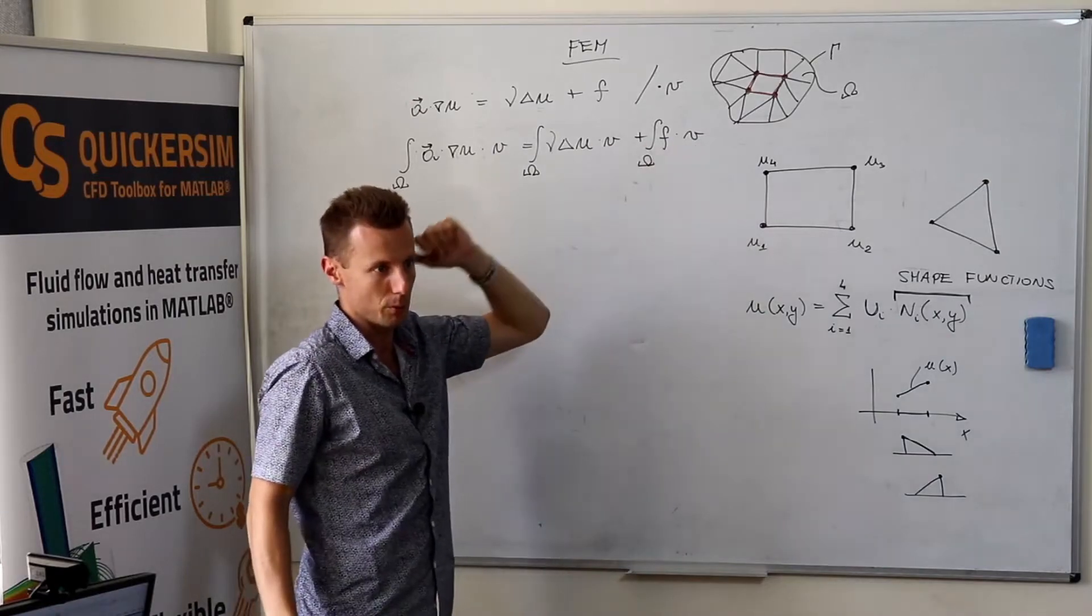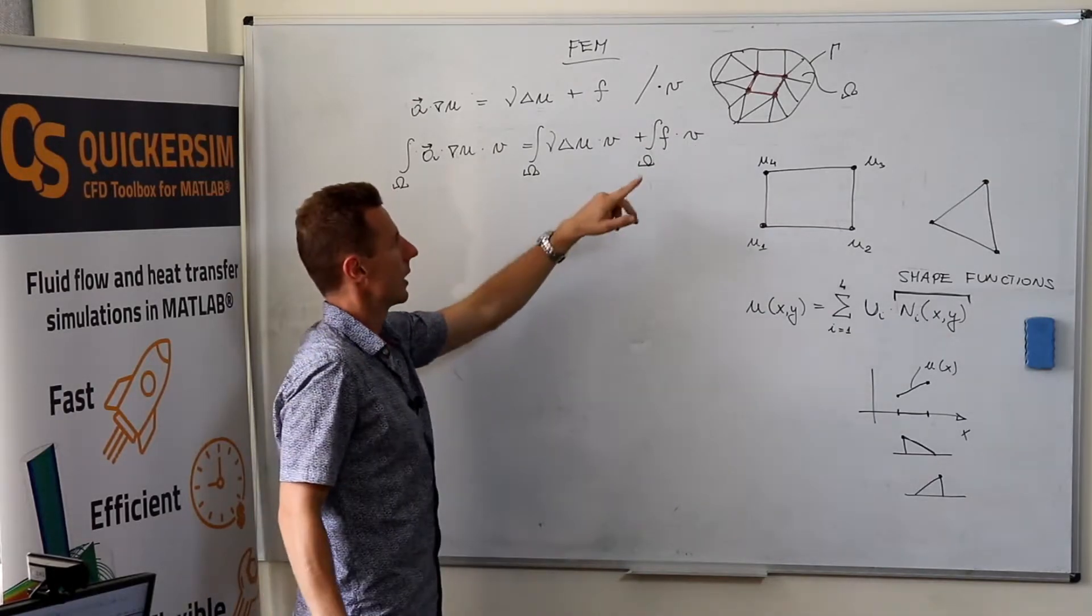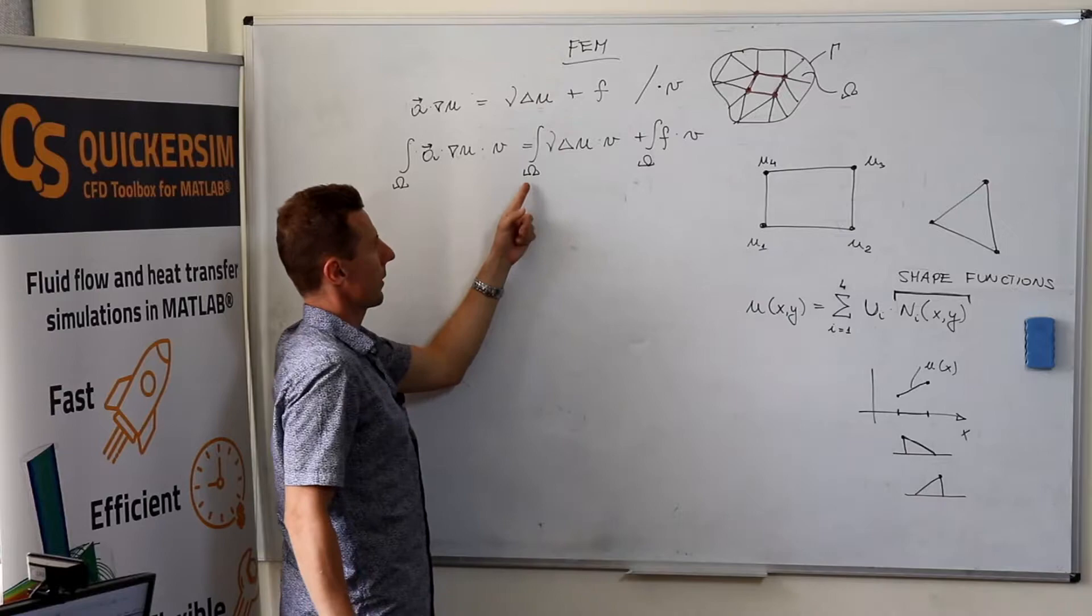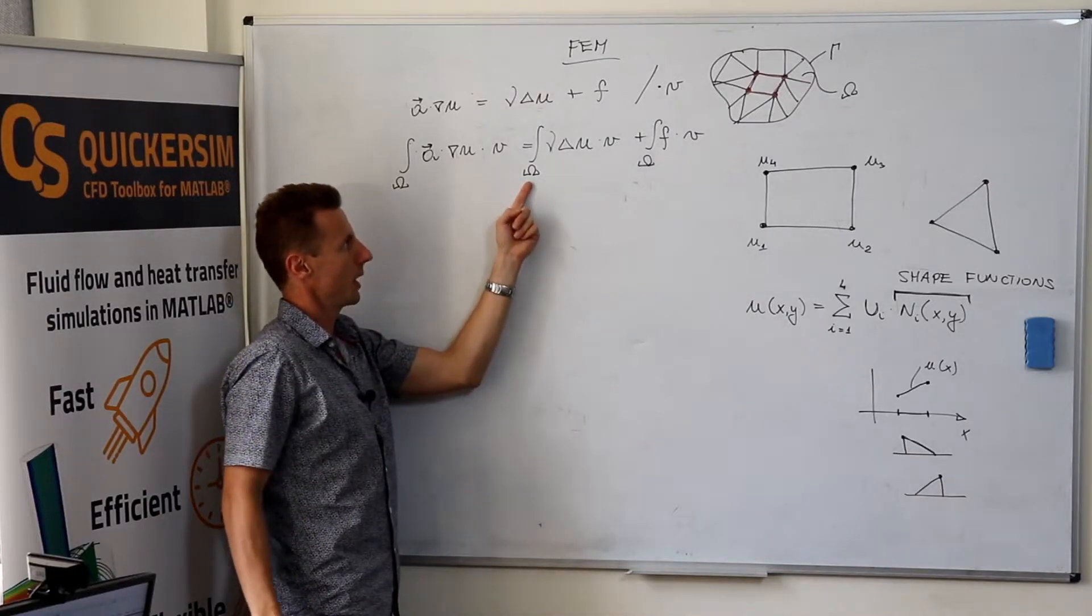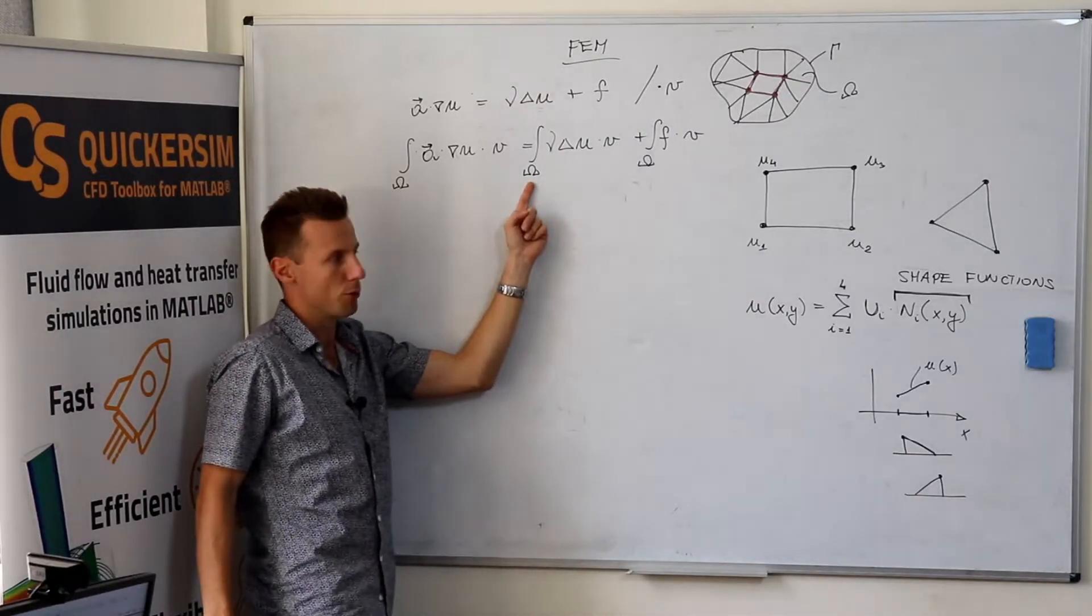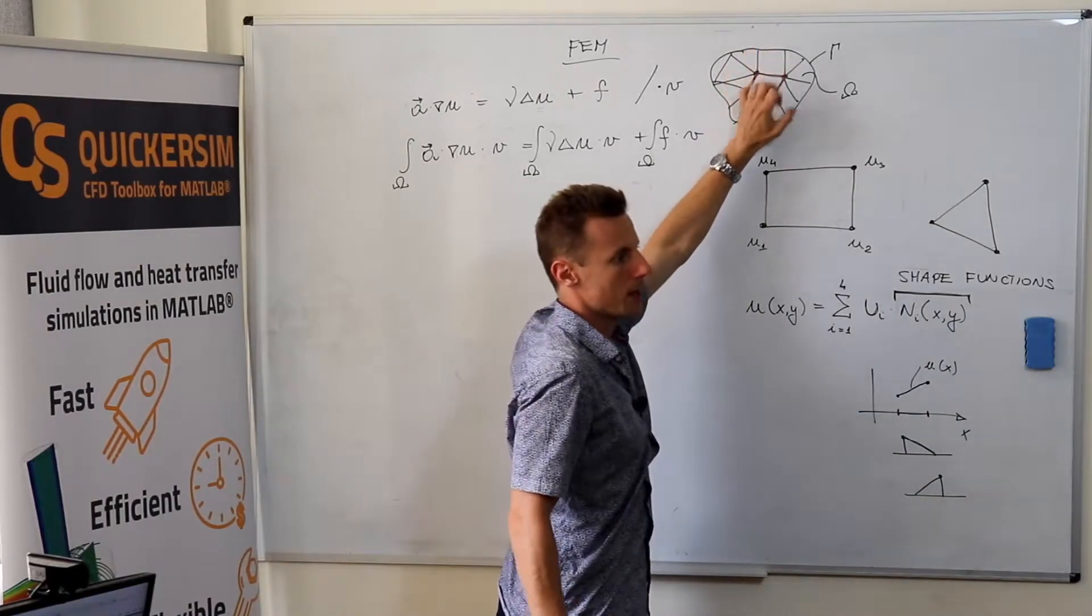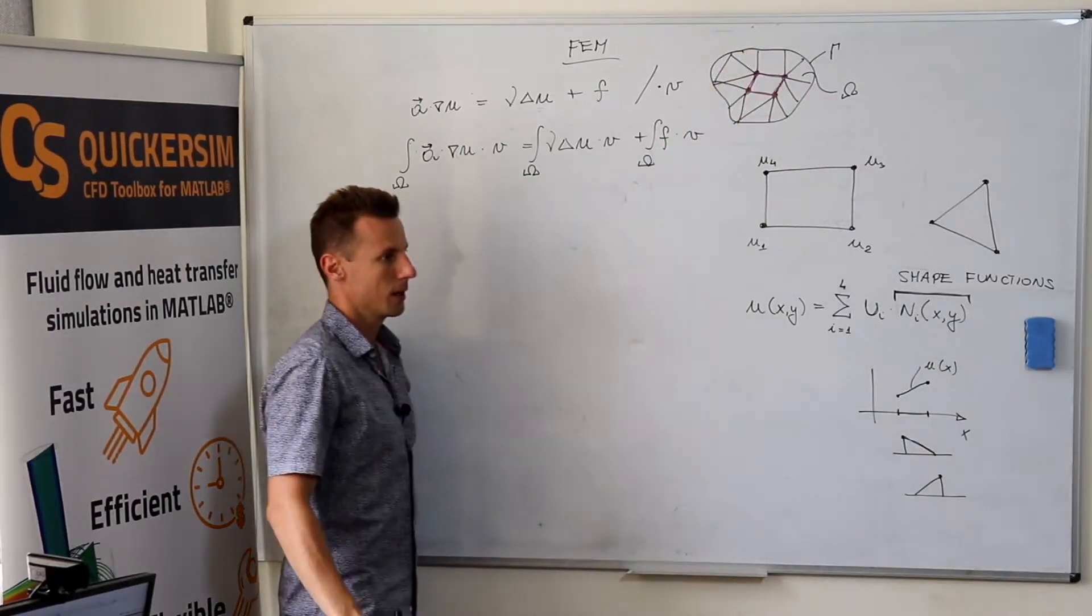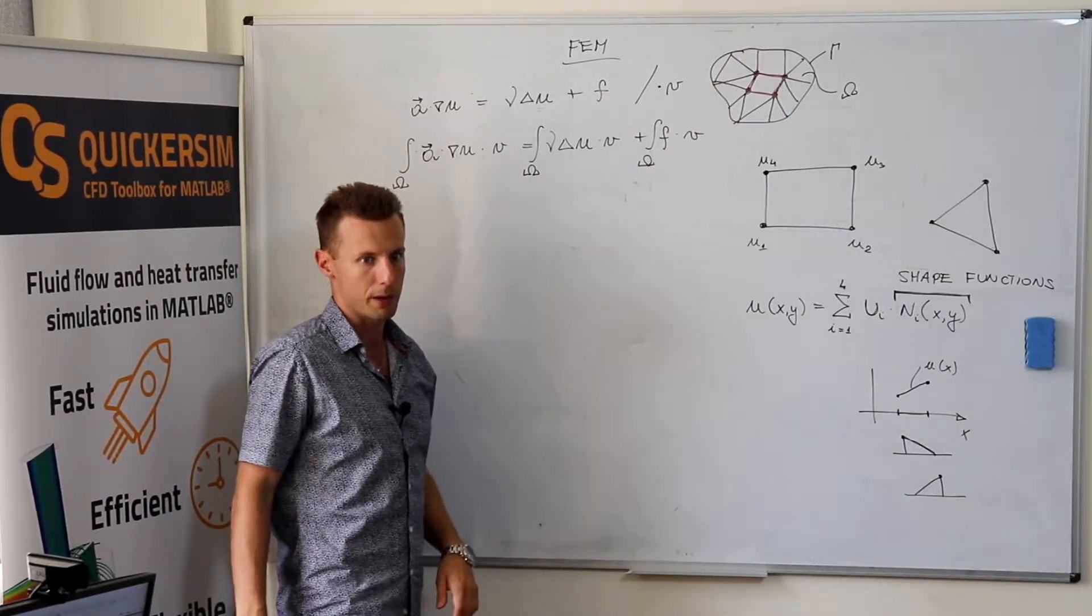I will not be writing the integration elements d omega because it will only obscure the notation. But I want to make it extremely clear that we are integrating over omega, the whole domain, not just the subdomain of one of the elements.